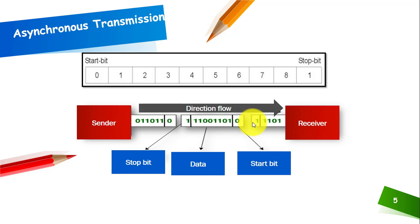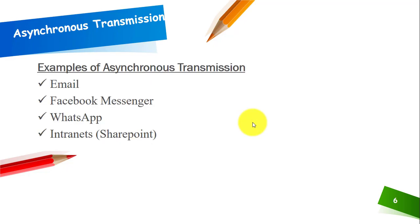We have a few examples of asynchronous transmission. Email is a classical example. If person A is sending an email to person B, there doesn't need to be a scheduled time — you can send email at any time. The receiver must have a valid email address to receive that email, and they can receive email at any time as well.